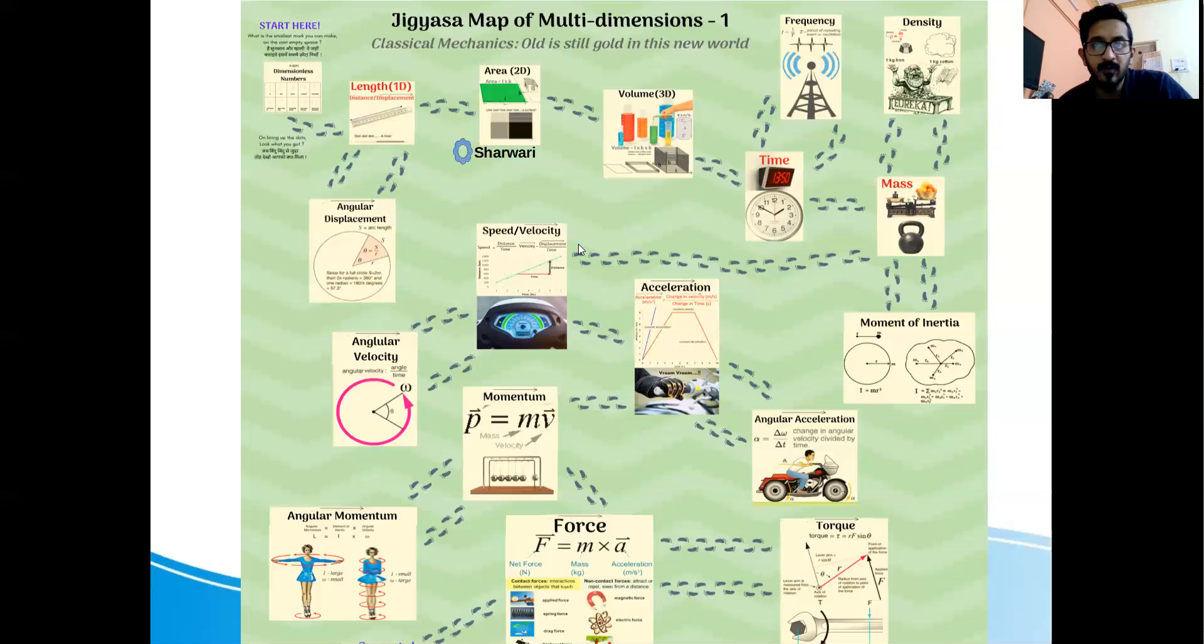And what you are looking at on the sides: for speed and velocity, there is angular velocity. For length, there is angular displacement. For mass, there is moment of inertia. For acceleration, there is angular acceleration. For momentum, there is angular momentum. And for force, there is torque.